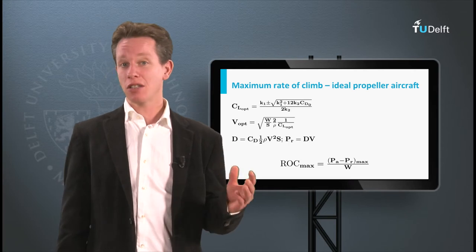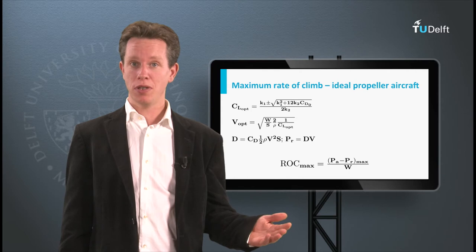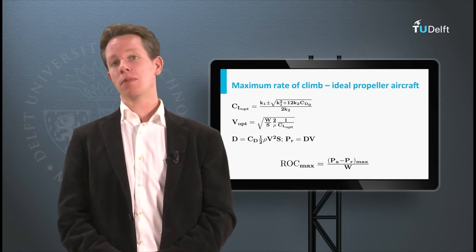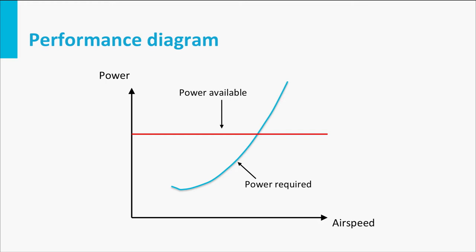In case of an idealized propeller aircraft with constant maximum power as a function of airspeed, this situation can in fact be solved analytically. In that idealized situation, the maximum excess power is present at the minimum power required condition.